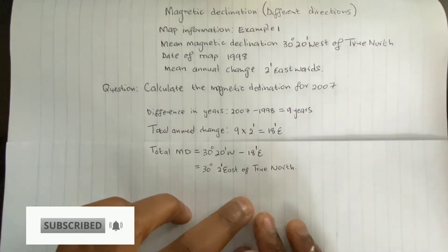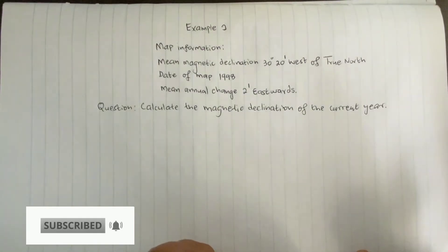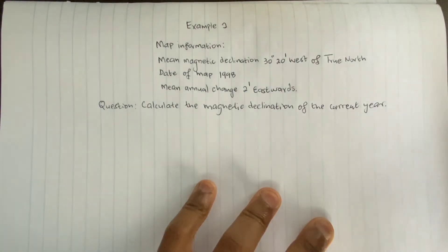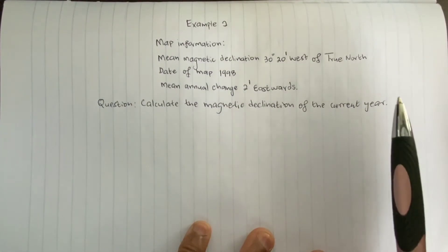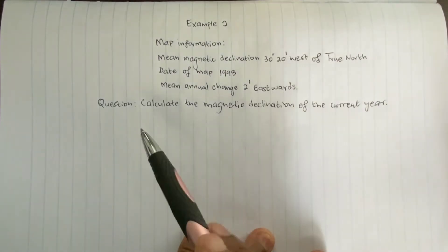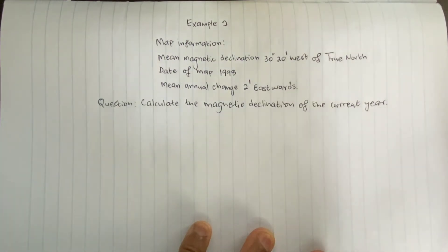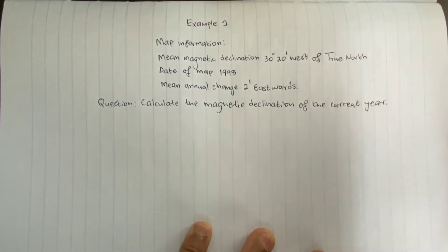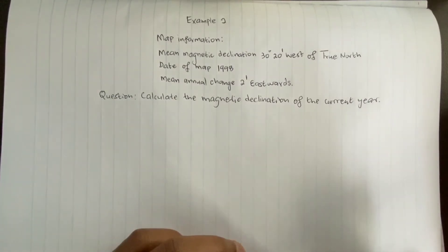Now let's look at example two. I use the same map information as in the first example, but the question is different — it asks to calculate the magnetic declination for the current year. When asked for the current year, you use the year you are in, which in this case is 2024.